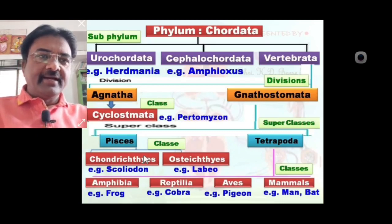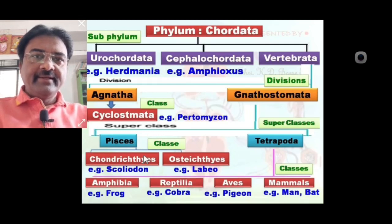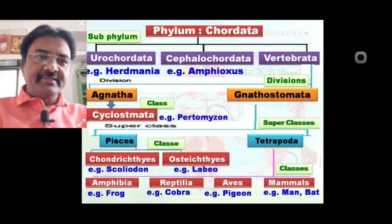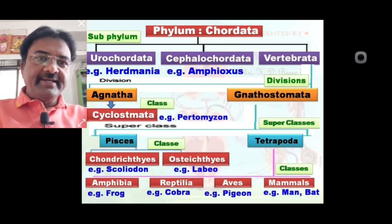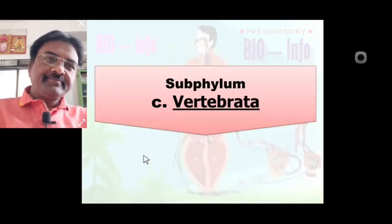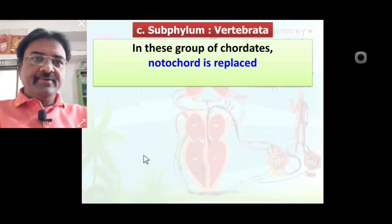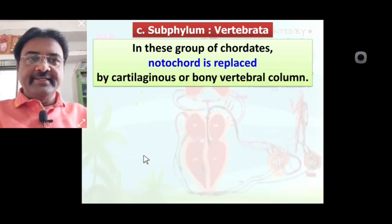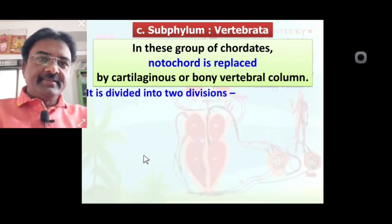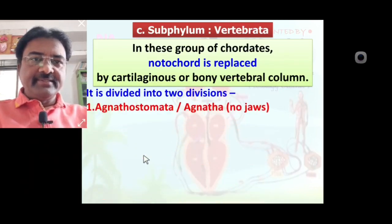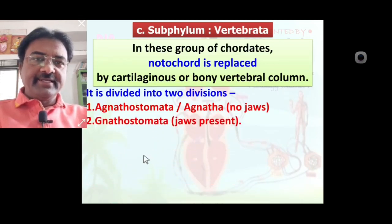Superclass Pisces is further divided into two classes: Chondrichthyes and Osteichthyes — cartilaginous fish and bony fish. Superclass Tetrapoda is further divided into four classes: Amphibia, Reptilia, Aves, and Mammals. Division Gnathostomata contains superclass Pisces and Tetrapoda under phylum Chordata, sub-phylum Vertebrata. In the previous lecture, we detailed discussed Agnathostomata division containing class Cyclostomata.